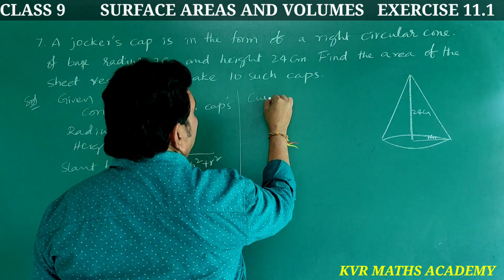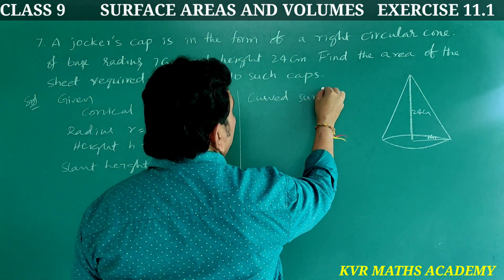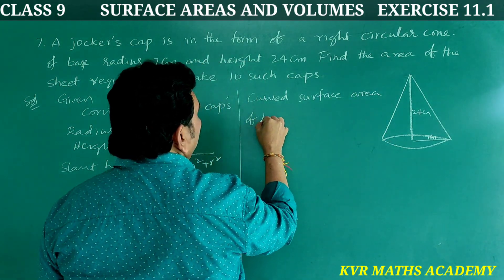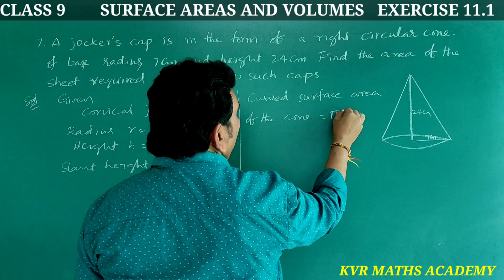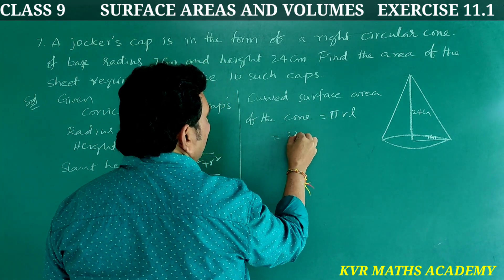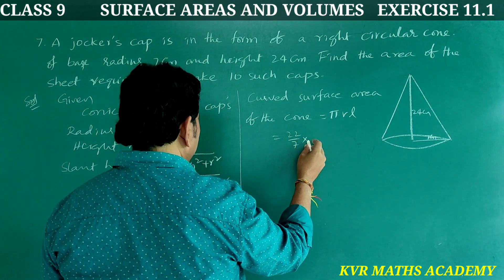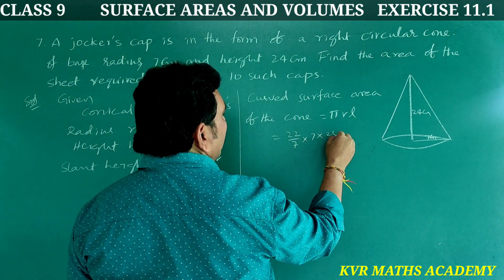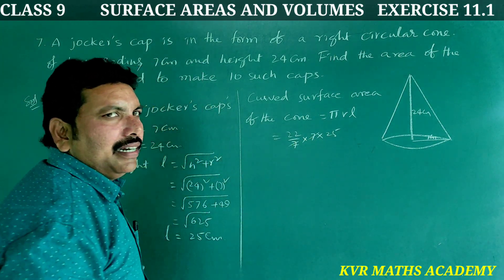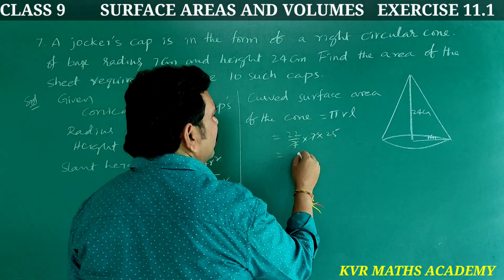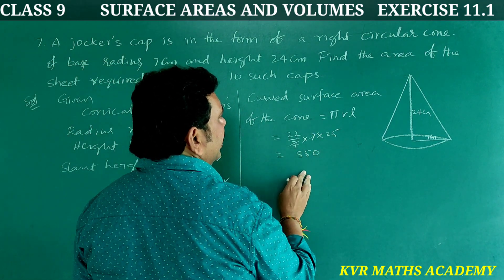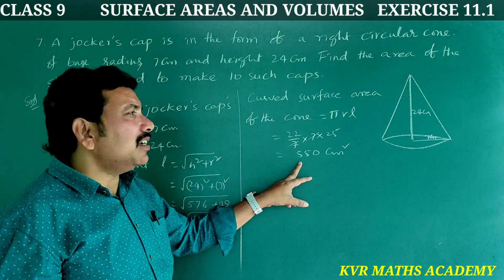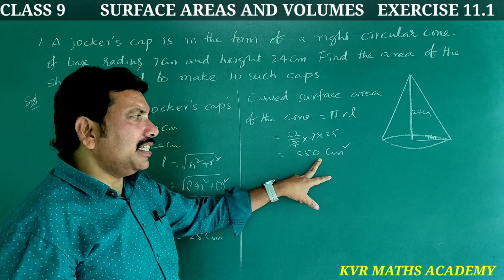Curved surface area of the cone is equal to π r L, that is equal to 22/7 into radius 7 into slant height 25. The 7 cancels, so that is 22 into 25, equal to 550 cm². The curved surface area of one cone is equal to 550 cm².